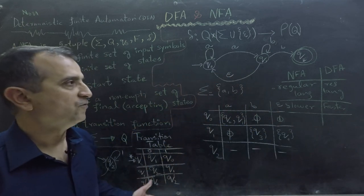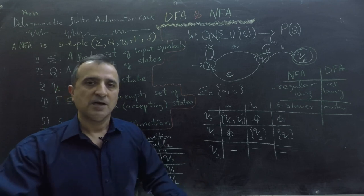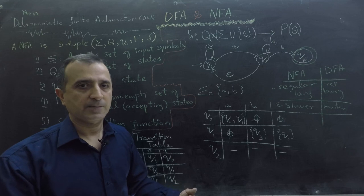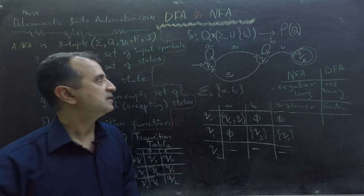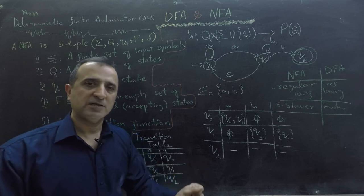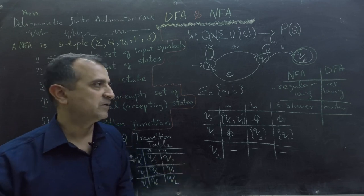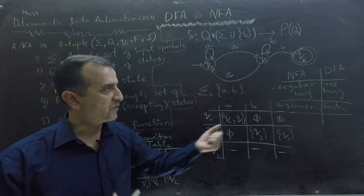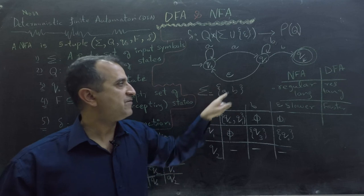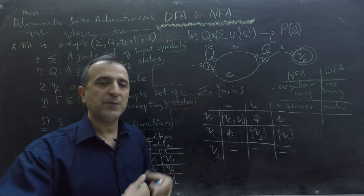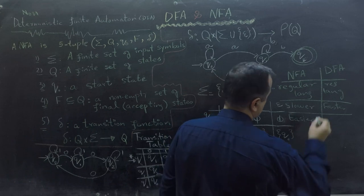Which one is easier to create by humans and easier to create by computer? Given a regular language, a computer can readily convert it into an NFA. However, taking a regular expression and converting it to a DFA is not straightforward. Therefore, computers usually start with the regular expression, create an NFA, and then convert the NFA to a DFA. For humans, because NFA has fewer rules — we can transition using epsilon and don't have to transition on all input symbols — creating NFA is also easier for humans. So NFA is easier to create, while DFA is more difficult.